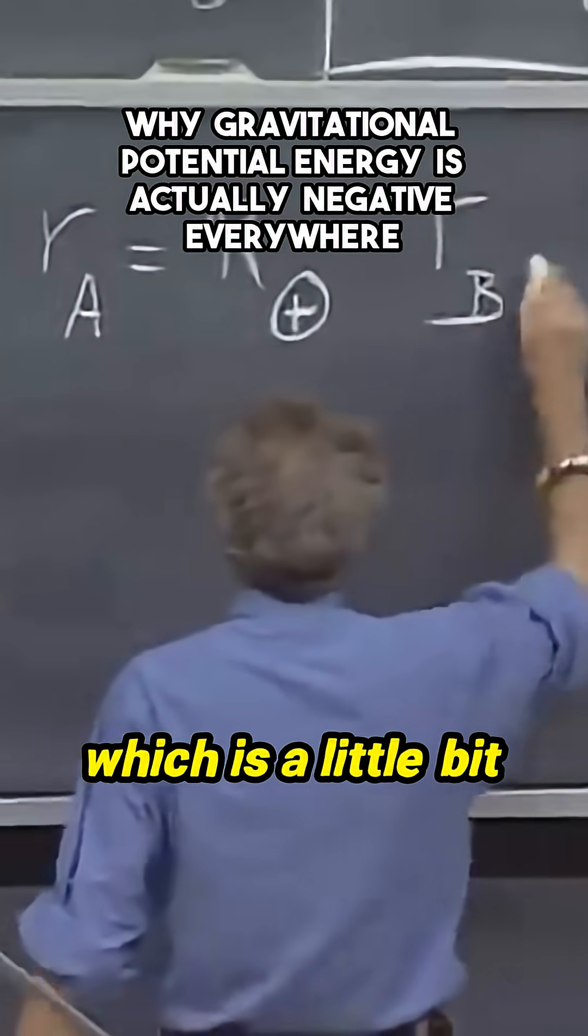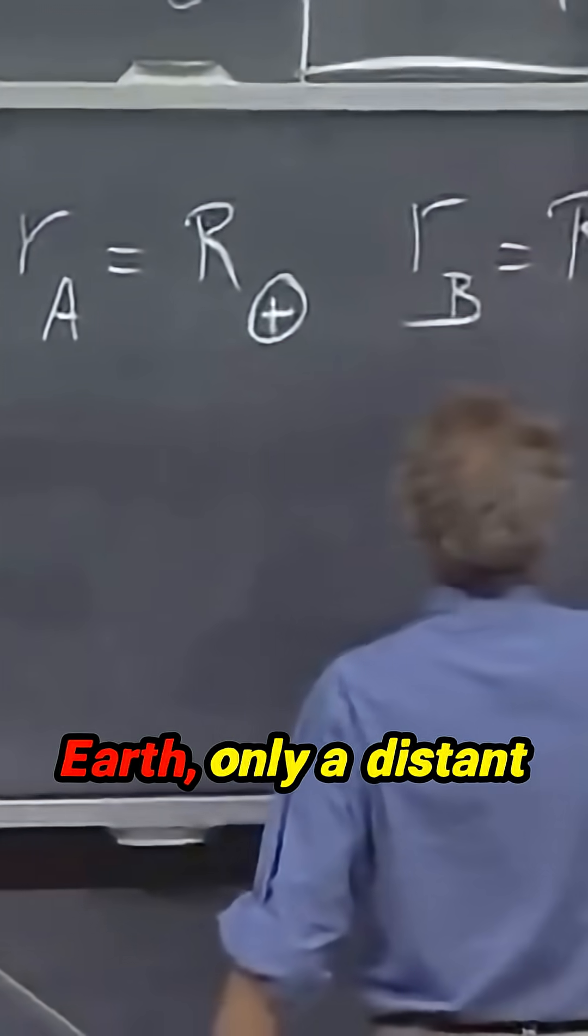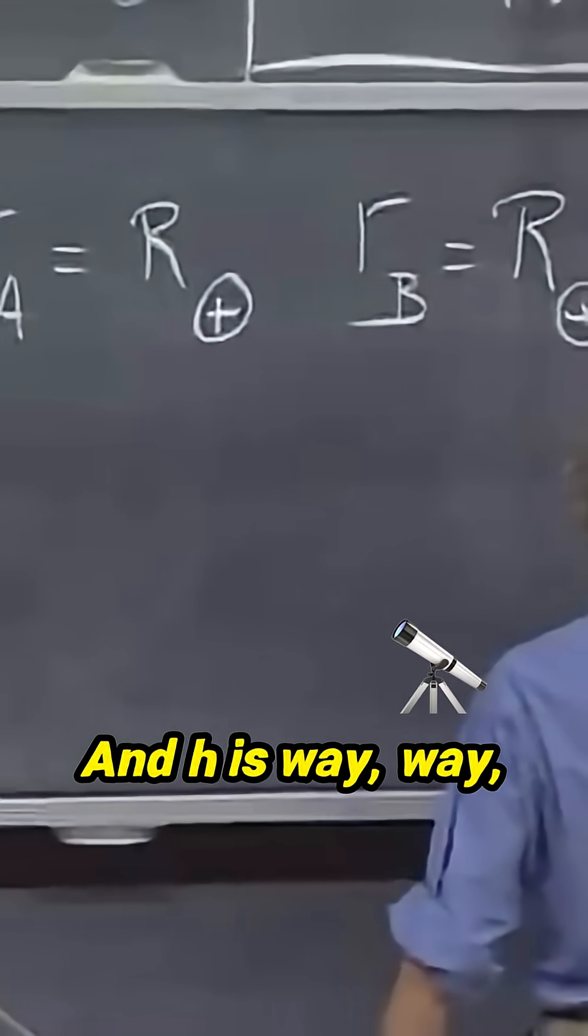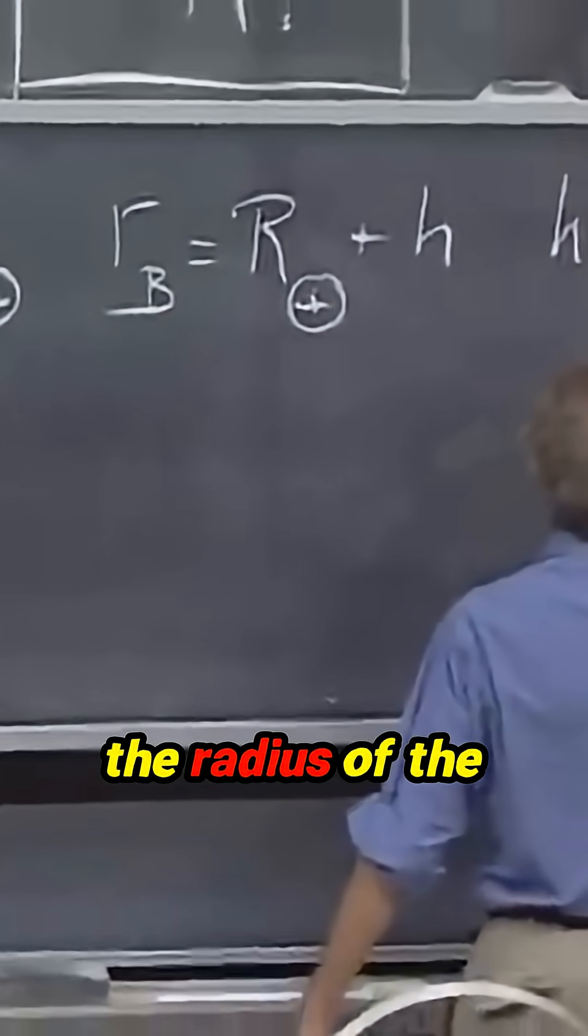Go to point B, which is a little bit further away from the center of the Earth, only a distance h. And h is way, way, way smaller than the radius of the Earth.